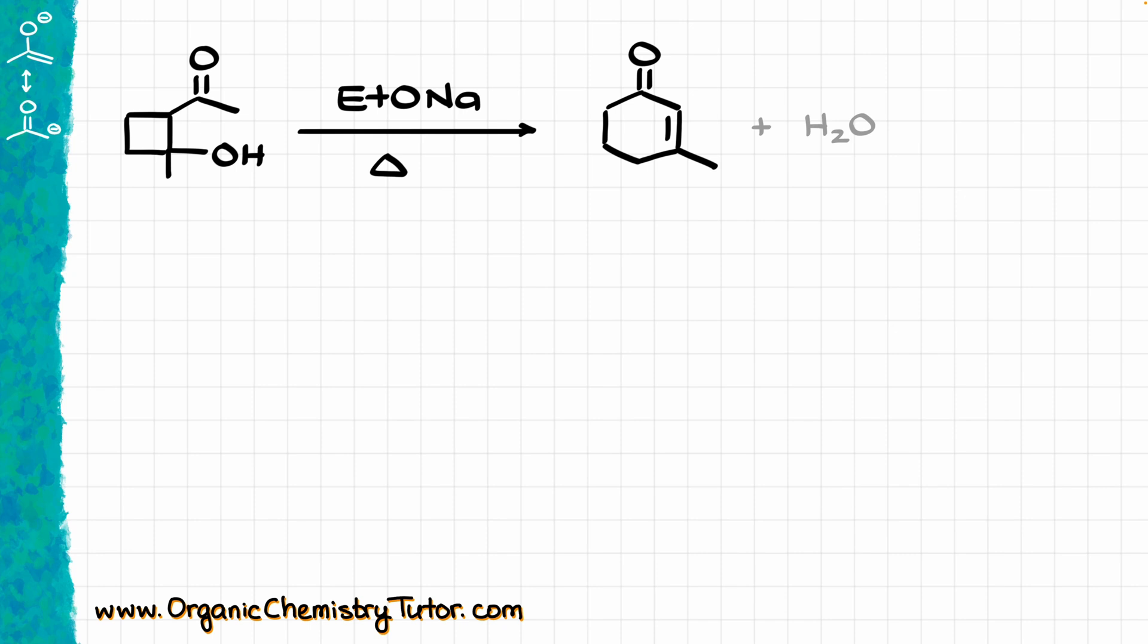When it comes to this question, the very first thing that jumped at me right away is that I have the aldol starting material, although in this case we have a cyclic aldol. And I have an alpha-beta unsaturated compound here, which is also looking like a cycle. And another thing to remember is that both of these structures are a part of the aldol condensation mechanism.